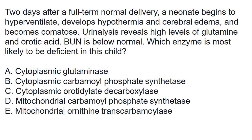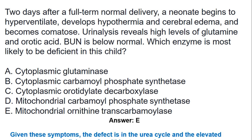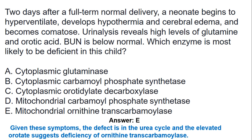The next question: two days after a full-term normal delivery, a neonate begins to hyperventilate, develops hypothermia, and becomes comatose. Urinalysis reveals high levels of glutamine and orotic acid. BUN is below normal. Which enzyme is most likely to be deficient? The answer is E. The defect is in the urea cycle, and the elevated orotate suggests deficiency of ornithine transcarbamylase.